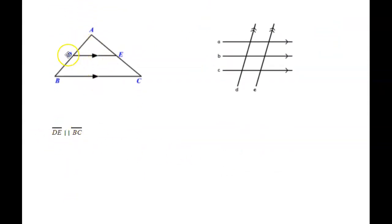How do you write that out? For this figure, for example, you'd say line segment DE with a straight line above the top is parallel, and it looks like an equal sign on its side, to line segment BC.